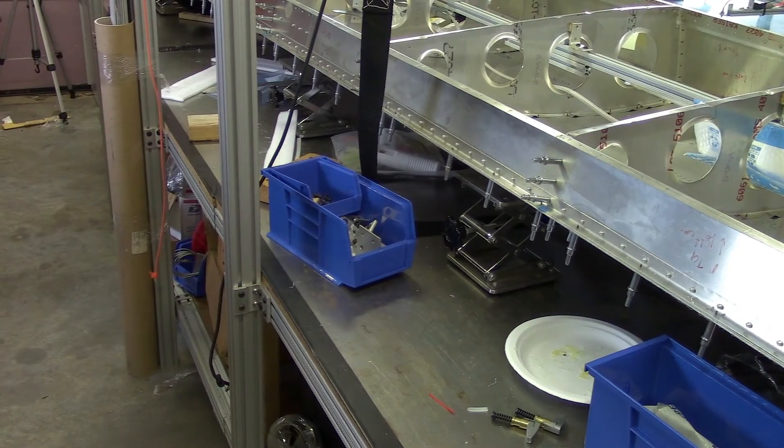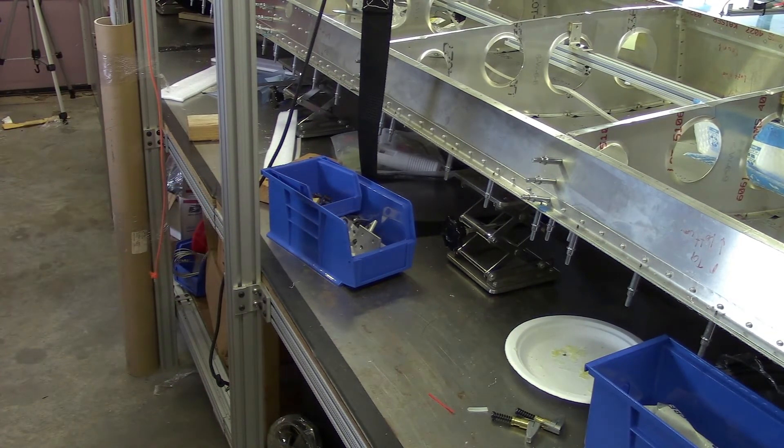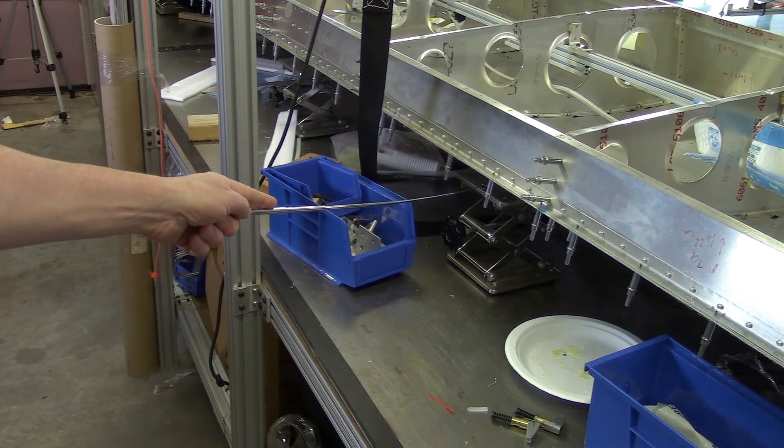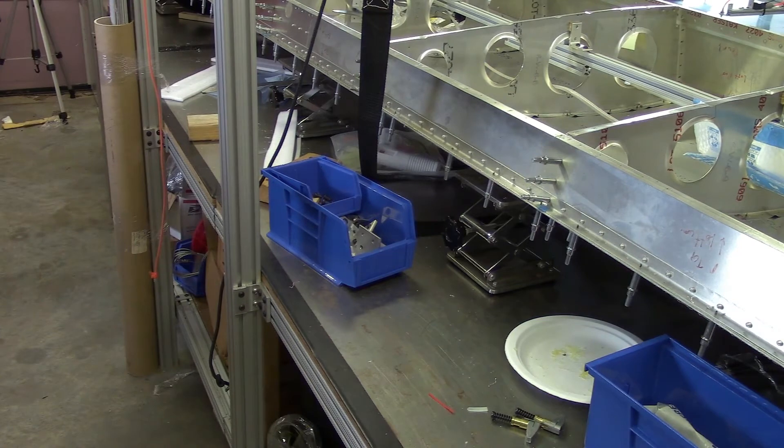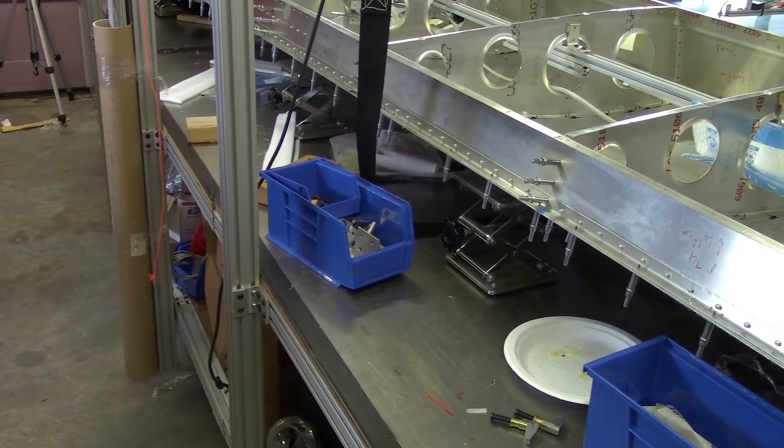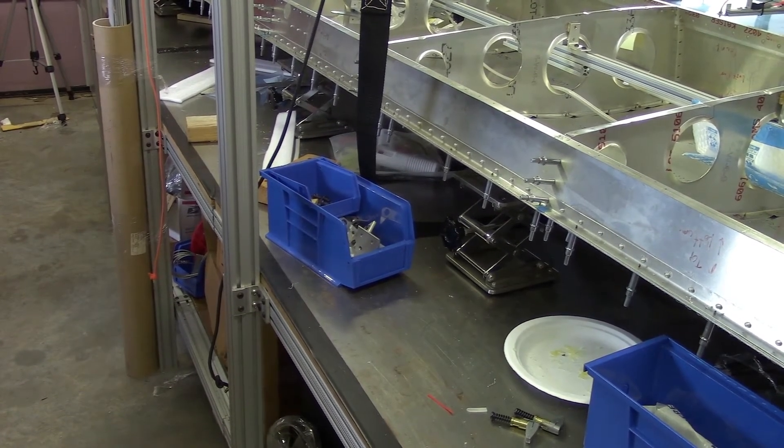On the back side, since it's a bit lighter, what I've got are lab jacks. Those are basically tools that are used in chemistry for holding up things like flasks and beakers, but they also come in very handy for adjusting. One thing I do have to worry about is that you're pushing directly on the skin, which you don't want to do on either the front or the back.